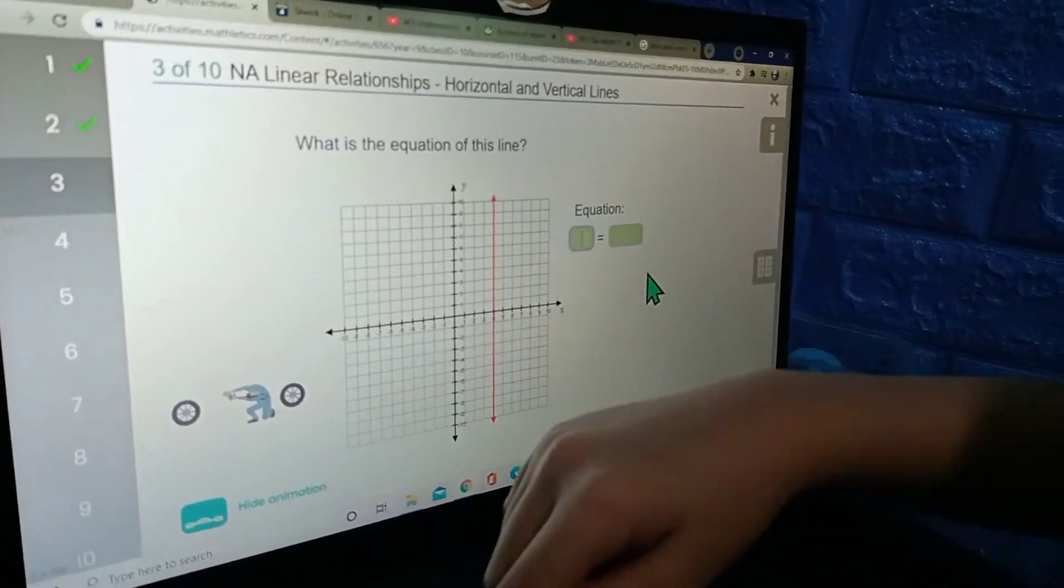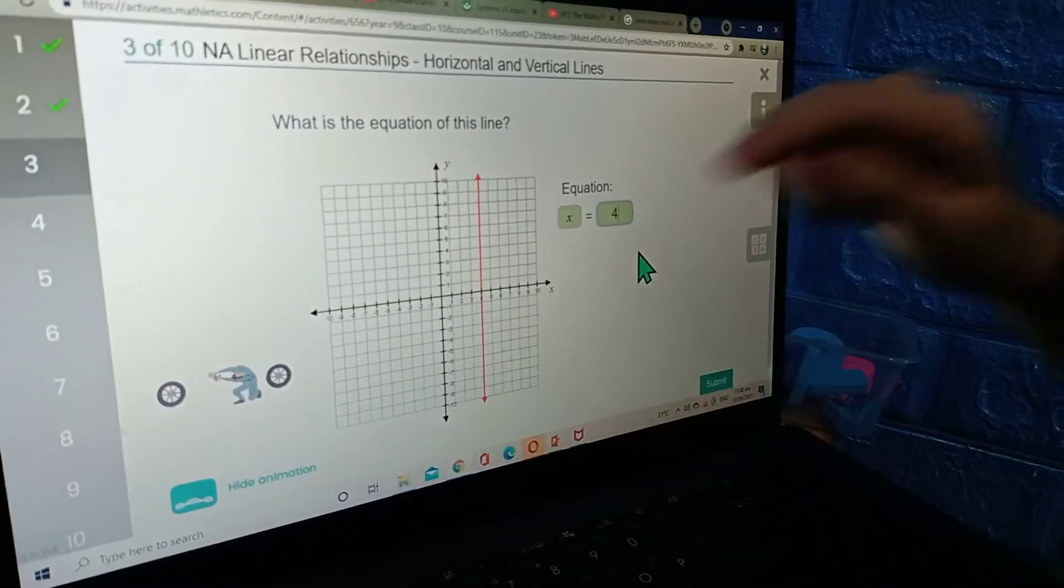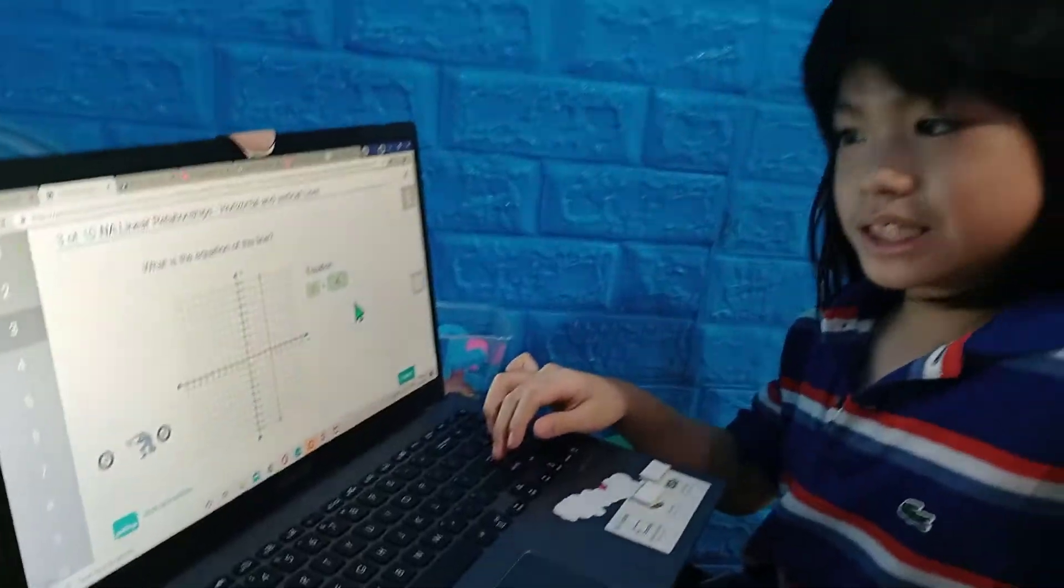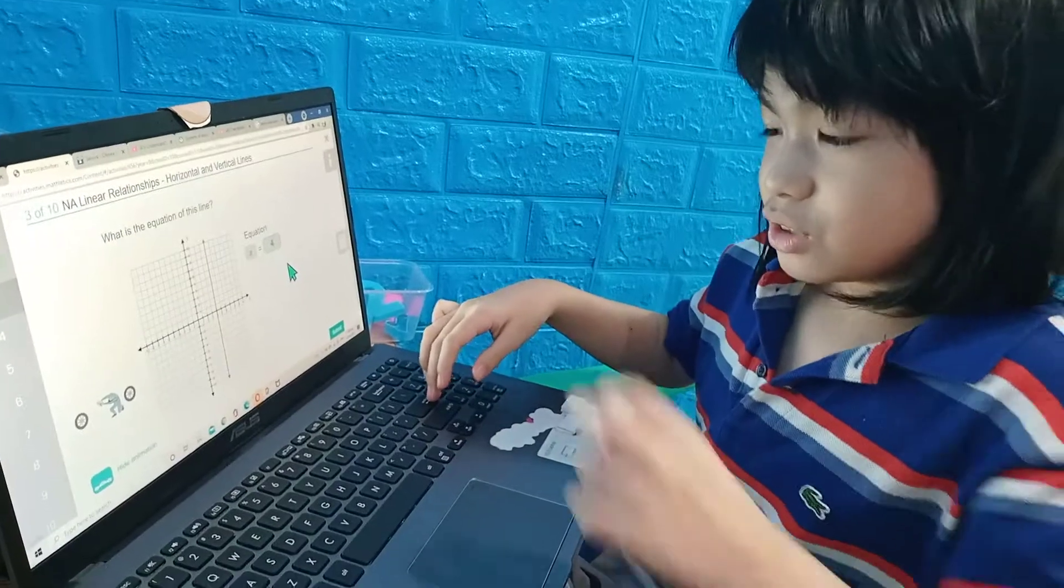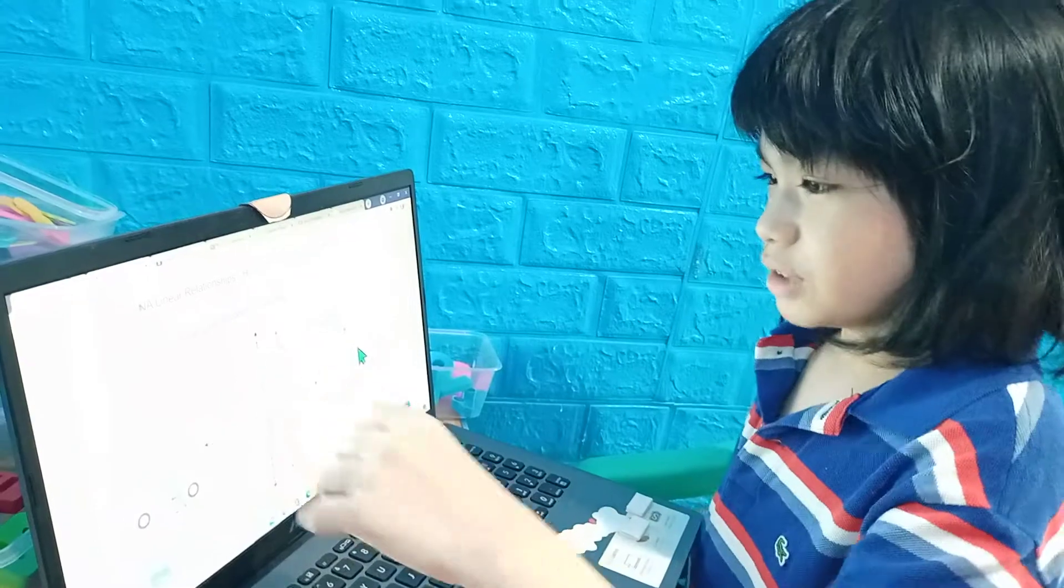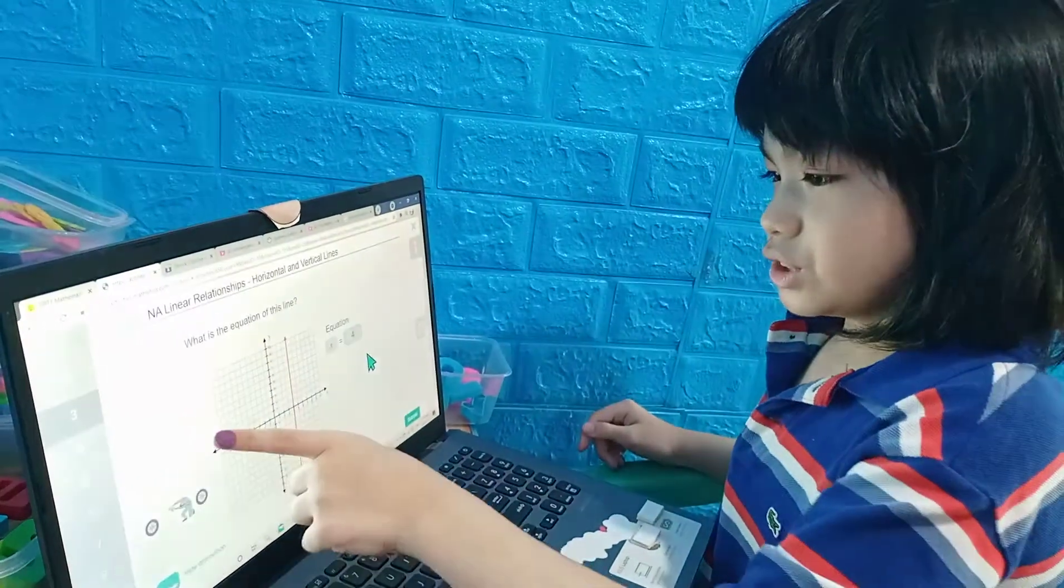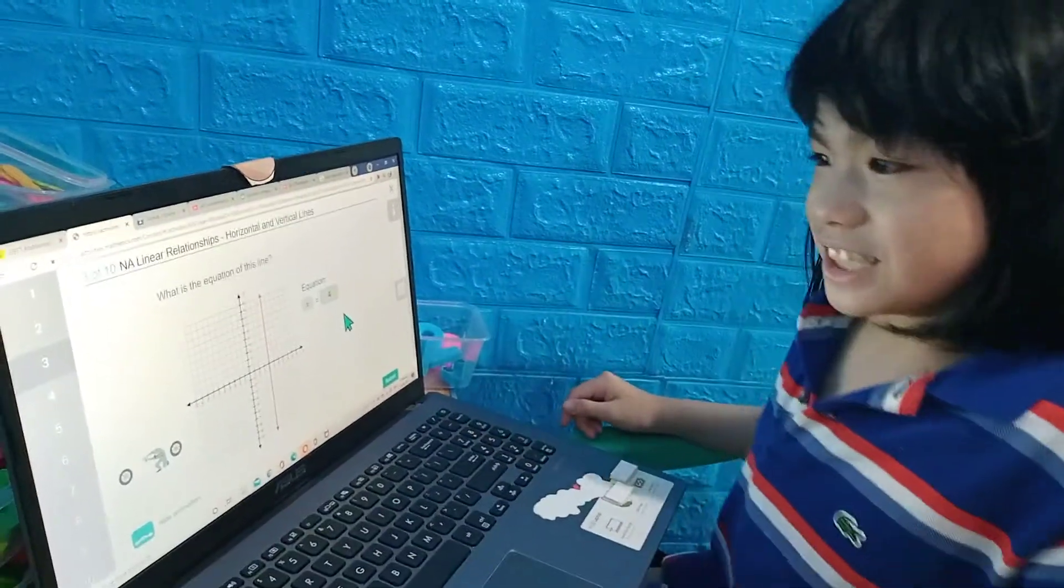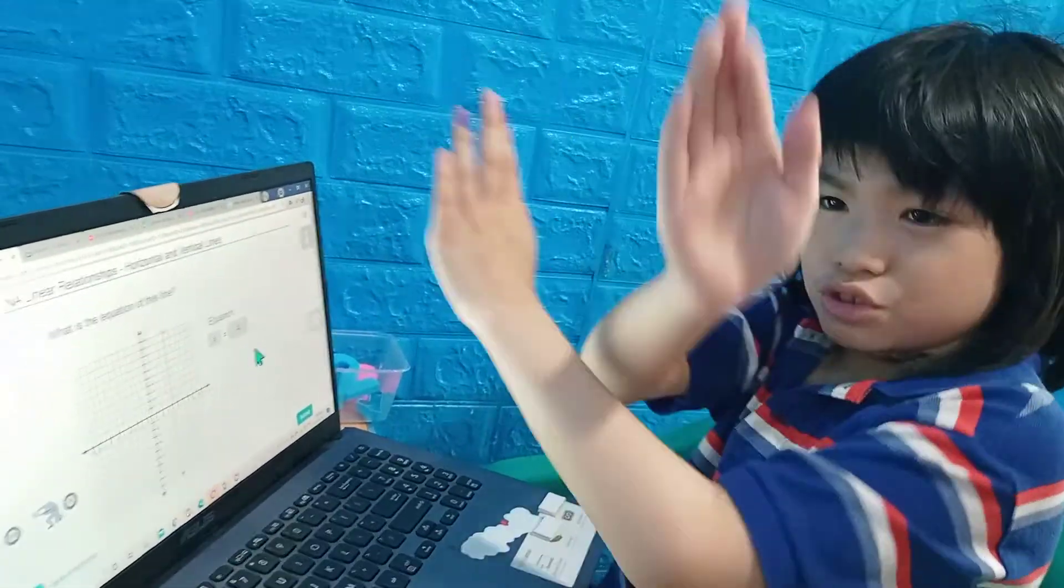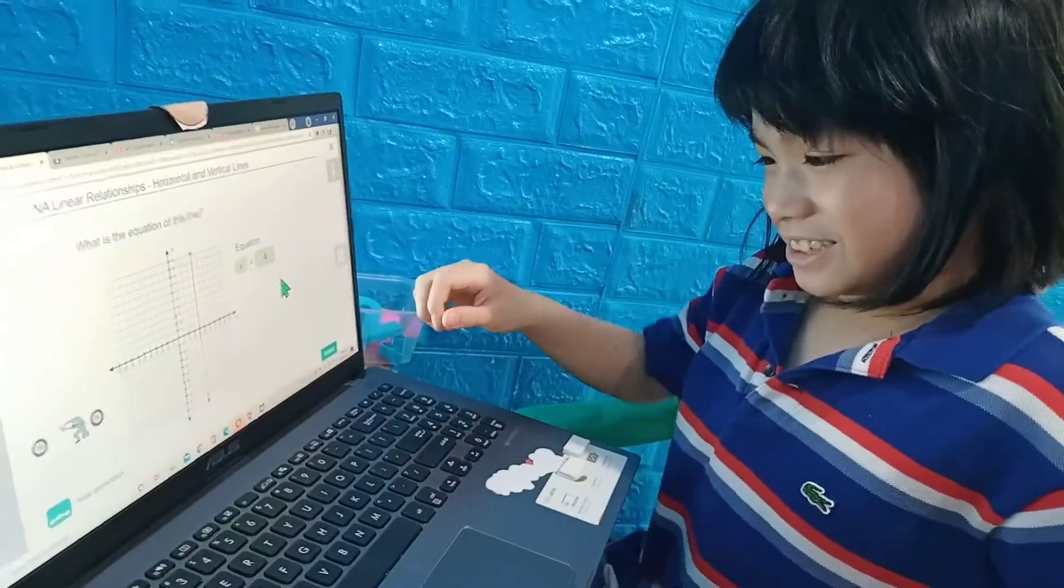Now it's x equals 4, of course. So now we enter again because it's just an x, no matter what. Whenever it's an x line, it goes in the y axis. Whenever it's a y line, it goes like an x axis.